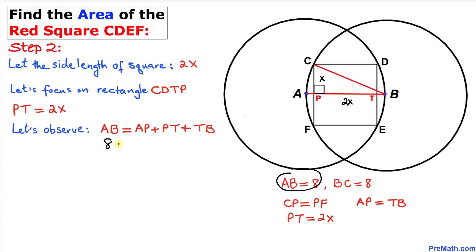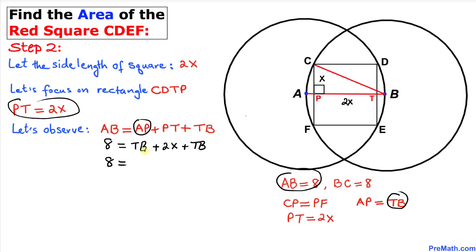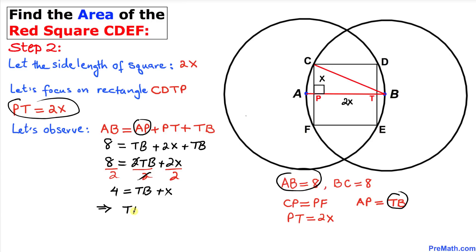Let's fill in the blanks and replace AB with 8. Since AP equals TB, we get: 8 = TB + 2x + TB, which gives us 8 = 2·TB + 2x. Dividing across by 2 gives us 4 = TB + x, so TB = 4 minus x.